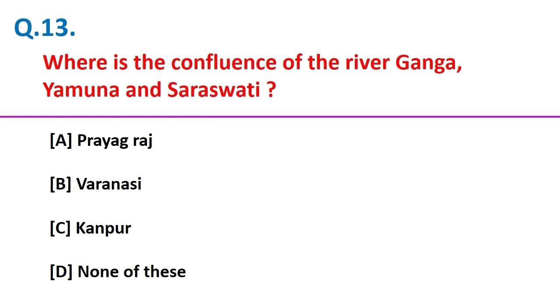Where is the confluence of the rivers Ganga, Yamuna and Saraswati? Prayagraj, previously known as Allahabad.